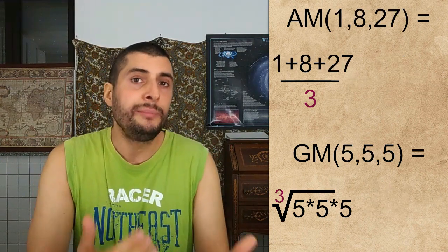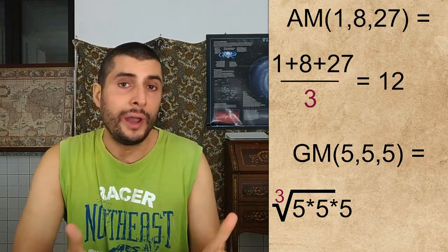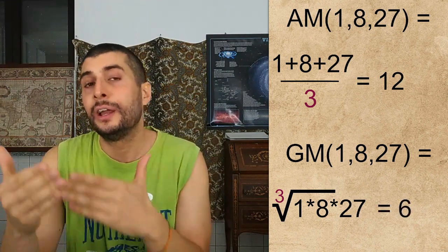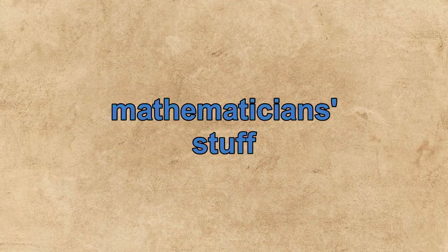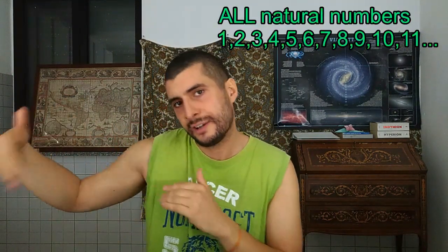For example, the arithmetic mean of 1, 8, and 27 is 12, while the geometric mean of the same three numbers — 1, 8, and 27 — is 6. Let's go mathematician mode now and try to find the average of all natural numbers: 1, 2, 3, 4, 5, etc. Our goal is to get, in any way possible, to a finite result.